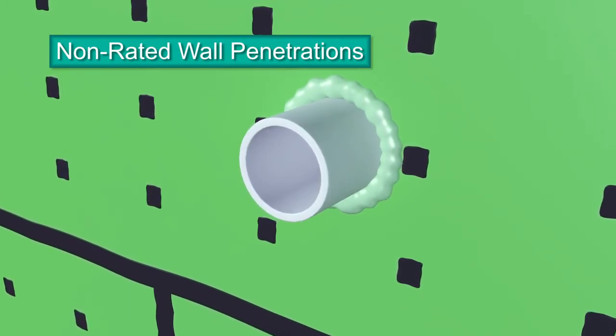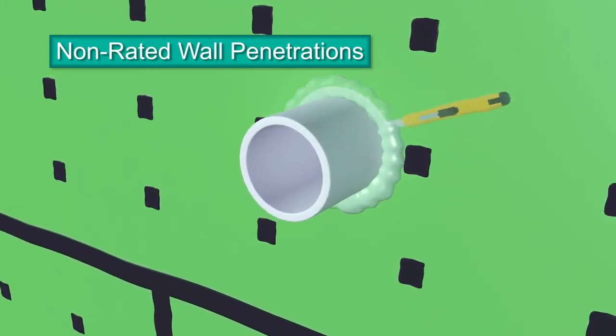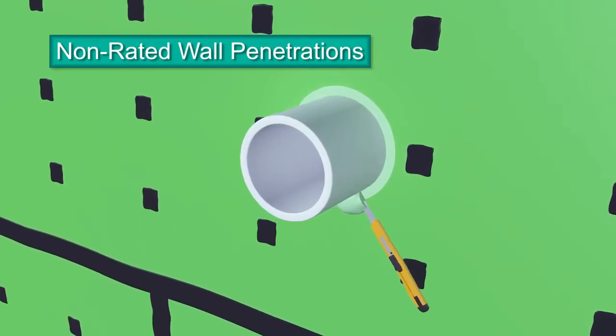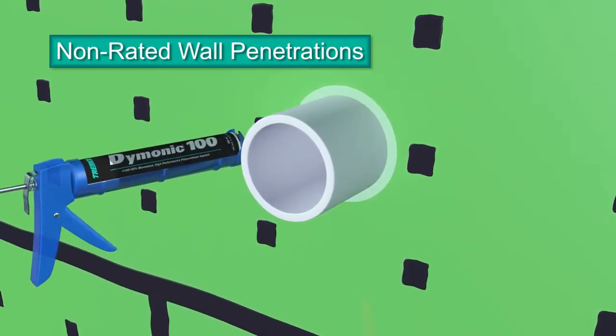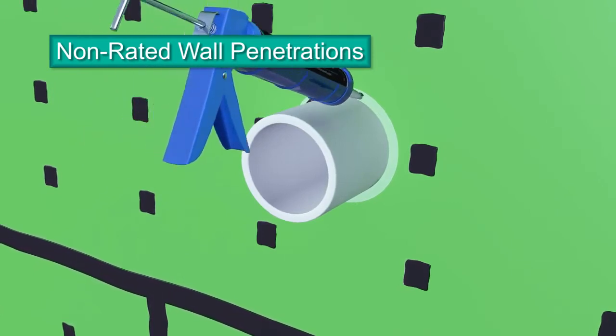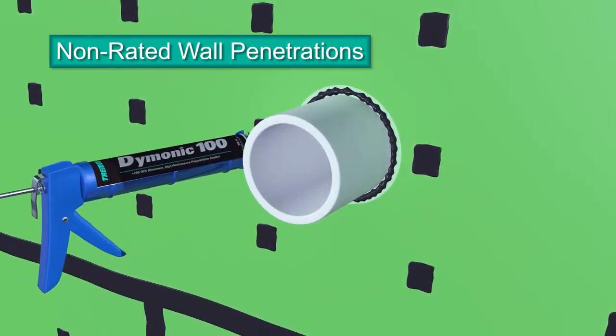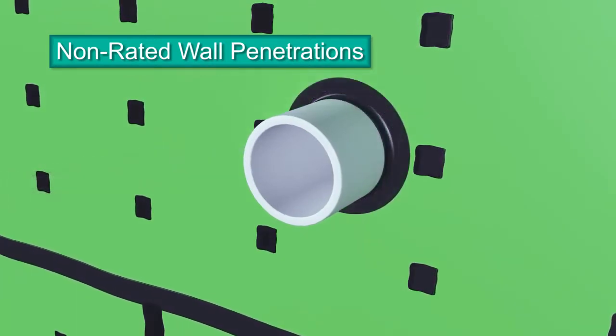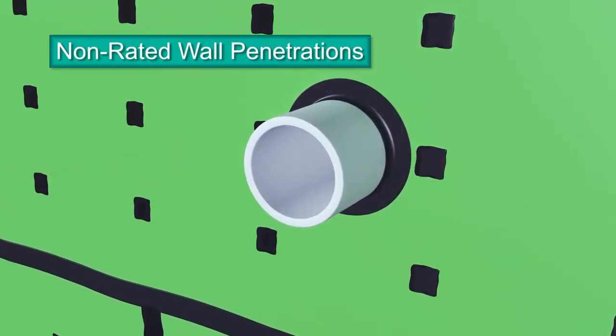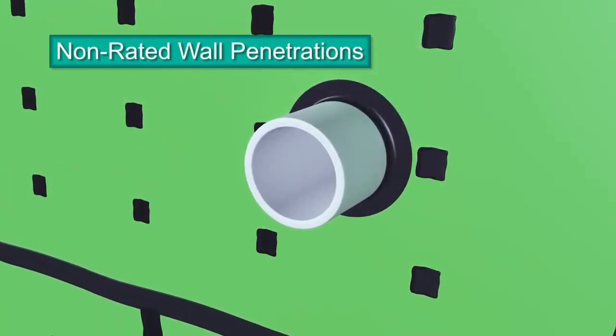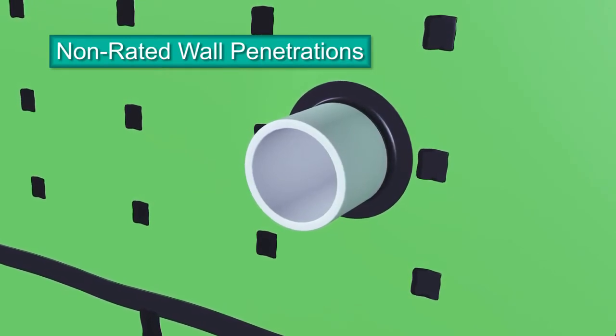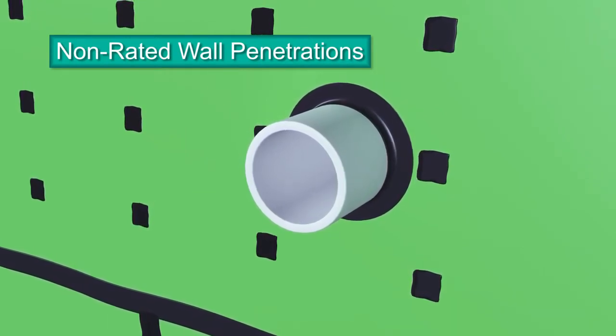With a utility knife, trim the foam flush with the panel's face. Next, apply a large bead of Dimonic 100 sealant over the foam. Tool the sealant over the foam, down onto the face of the panel, and onto the penetration, extending a minimum 1/4 inch onto both the panel surface and penetration. Ensure there are no holes or gaps in the sealant.